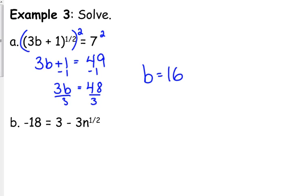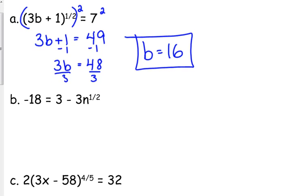You should always check it. Three times 16 is 48. 48 plus one is 49. 49 to the one-half is the square root of 49, which is 7. Usually, you're not going to have an issue unless you have a quadratic. But you still should check it first.